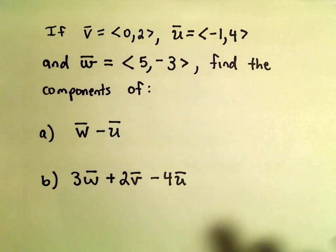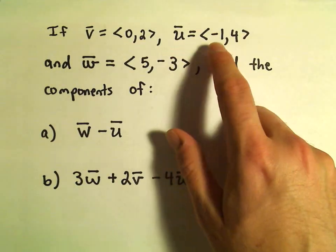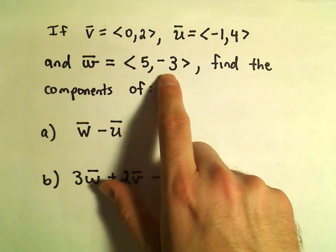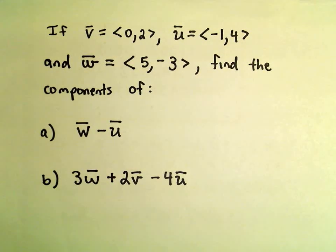So let's look at a couple examples here. We've got three vectors. V has components 0, 2. U has components negative 1, 4. W has components 5, negative 3. And we want to find the components in a couple different vectors.